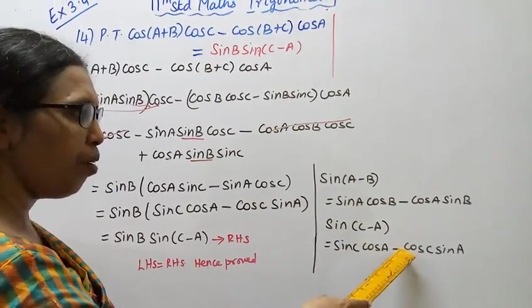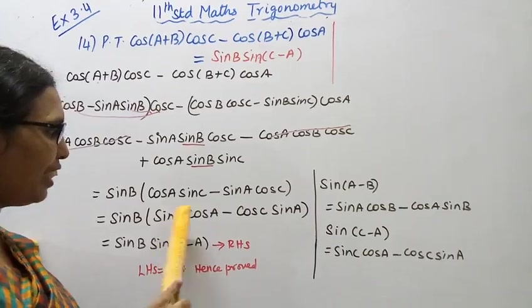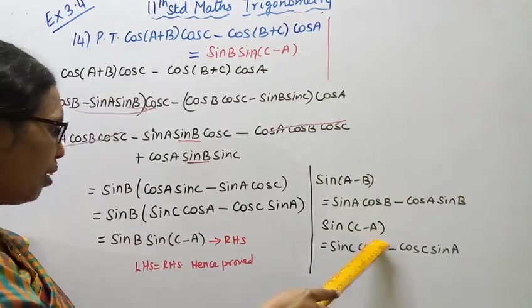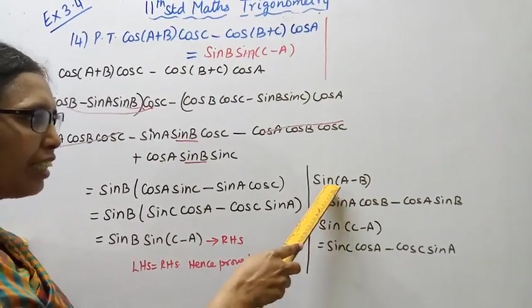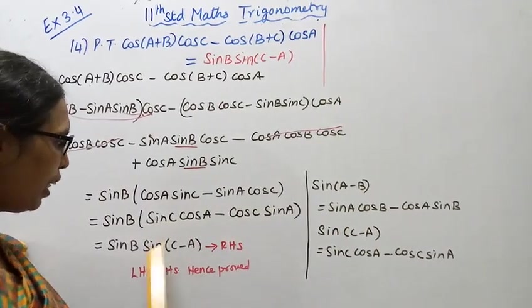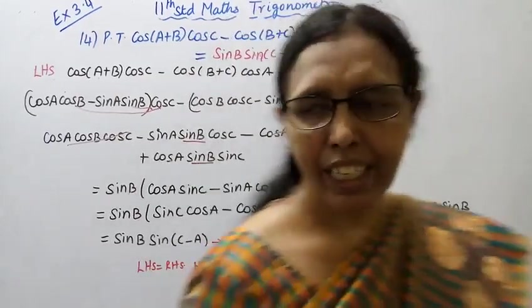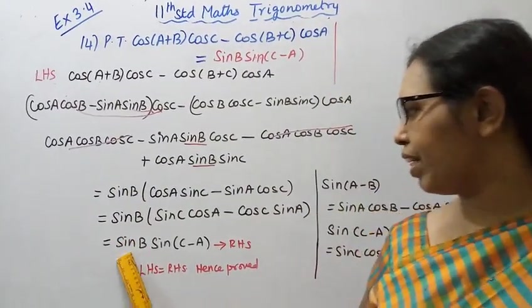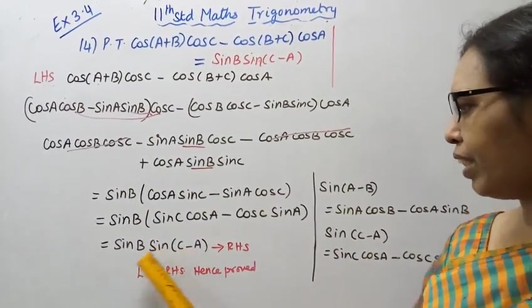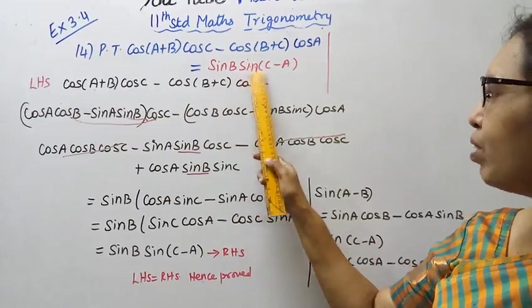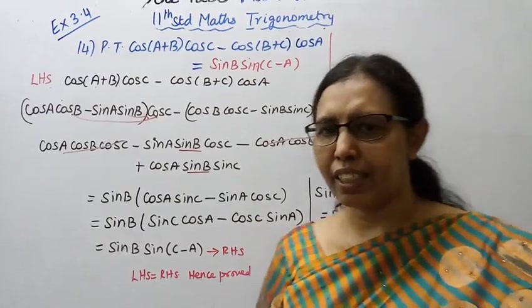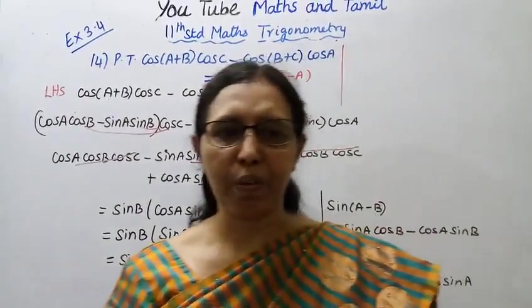Sin C cos A minus cos C sin A is sin(C-A). So sin B sin(C-A). Right-hand side is sin B sin(C-A). Left-hand side equals right-hand side, hence proven.